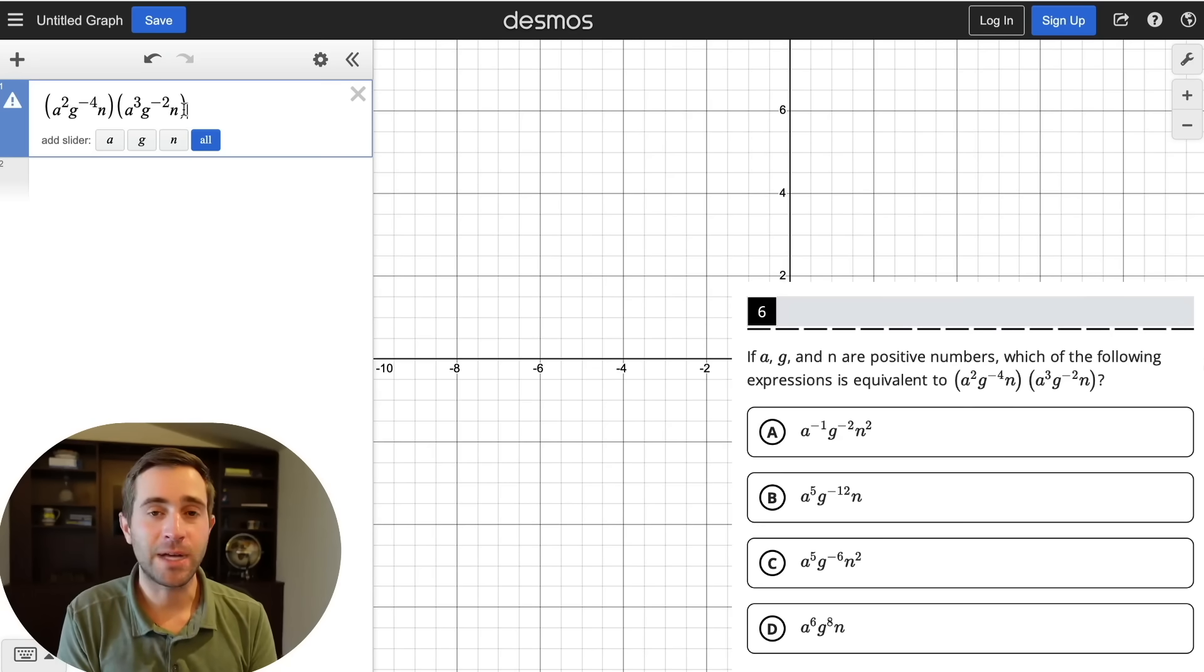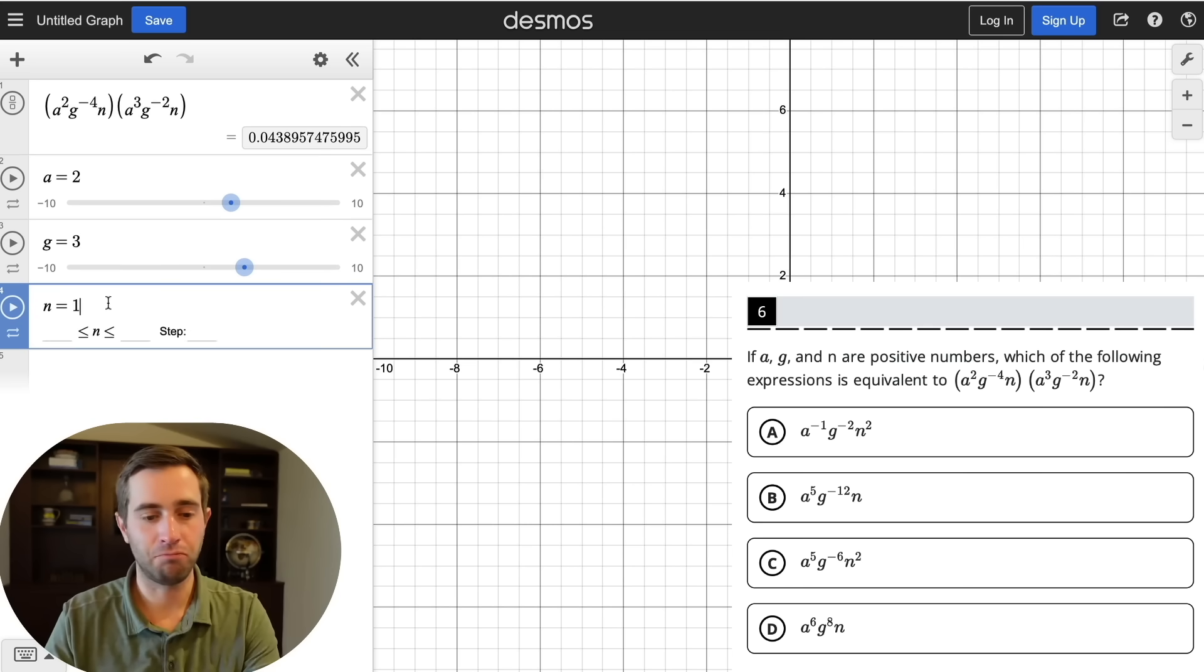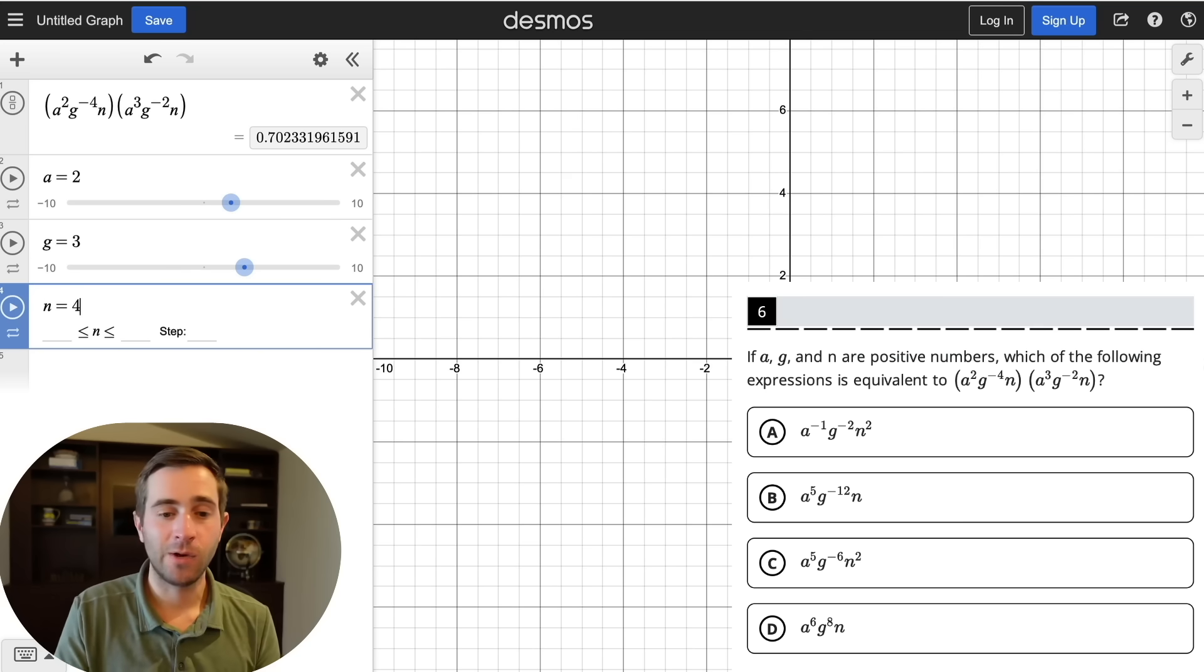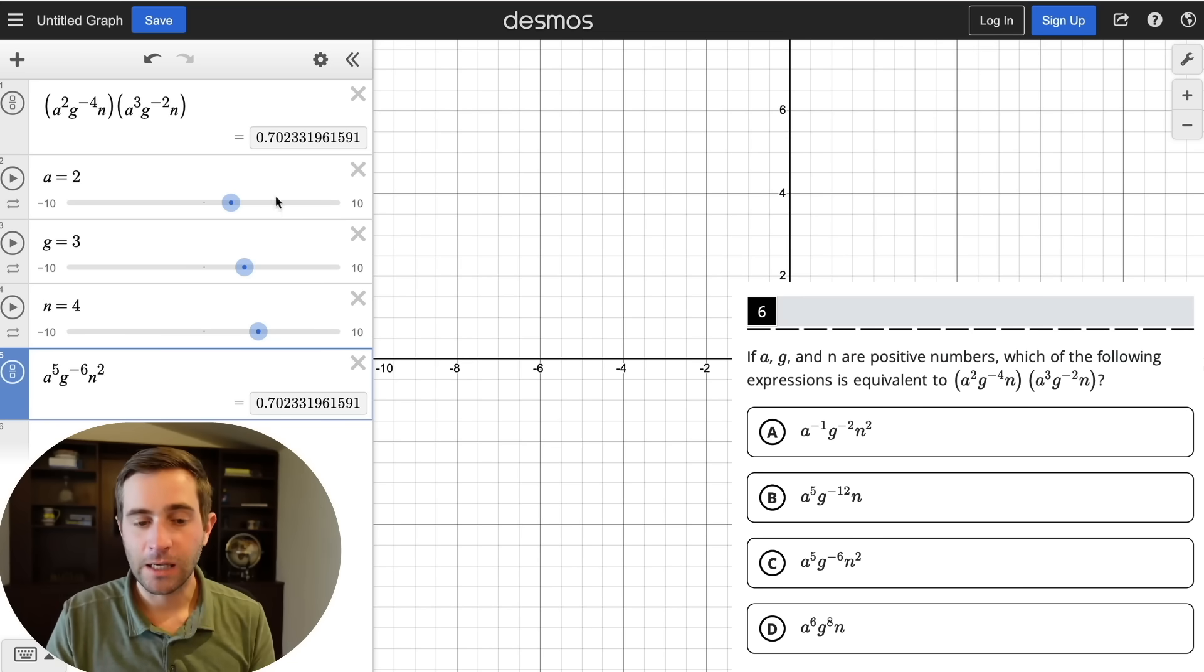Now, our next Desmos hack is going to be around equivalent questions. So if it says which answer choice is equivalent to whatever expression, you're going to type your original expression in, you're going to add sliders for the variables. And then I always just recommend using like two, three, and four, just so you have different values. And all you now need to do is go to your answer choices, and whichever one when you type out equals this exact same value that tells you that they're equivalent. So it's really helpful for some super challenging questions. We can see that c is our correct answer because a to the fifth, g to the negative six, and n to the second equals the exact same thing. So we can find our answer really easily.